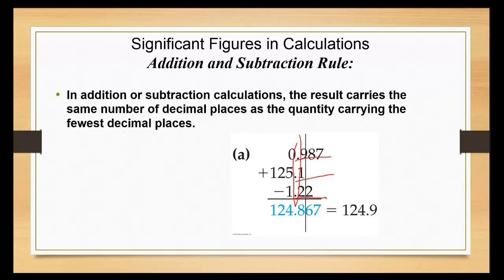For instance here, seven is our last significant figure. The second number, the one is the last significant figure. And the third number, the last two is your last significant figure. You want to end your number with whichever number ends first. So since this one here ends before the other ones, that's where I'm going to round it off.